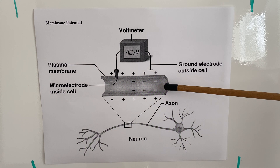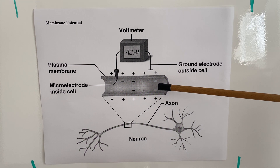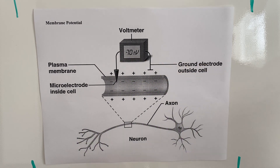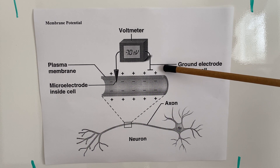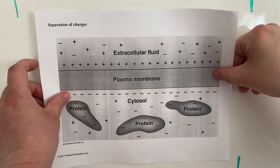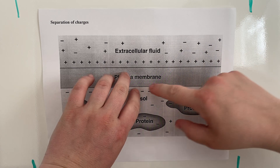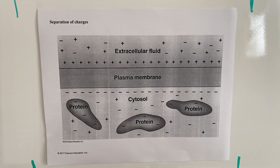If we take a closer look inside of the axon, we can see that the resting charge inside of that axon is negative 70 millivolts. So it has a net negative charge compared to the outside, which is positively charged. The reason why we have this separation of charges is because of the various ions and proteins that are present both inside and outside of the cell.